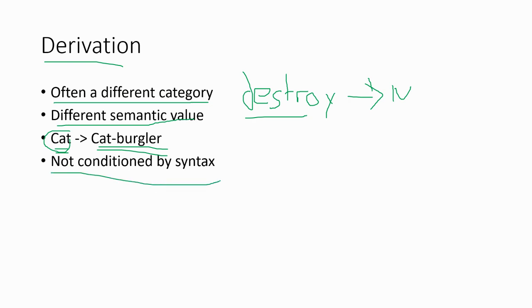And it's not conditioned by syntax. In other words, we don't perform this change because the words in this phrase require a cat-burglar rather than a cat. If I said this cat, I could say this cat-burglar. If I said these cats, I could say these cat-burglars. We don't have to have the burglar there in order to use this or these in front of it. So those are the main characteristics.